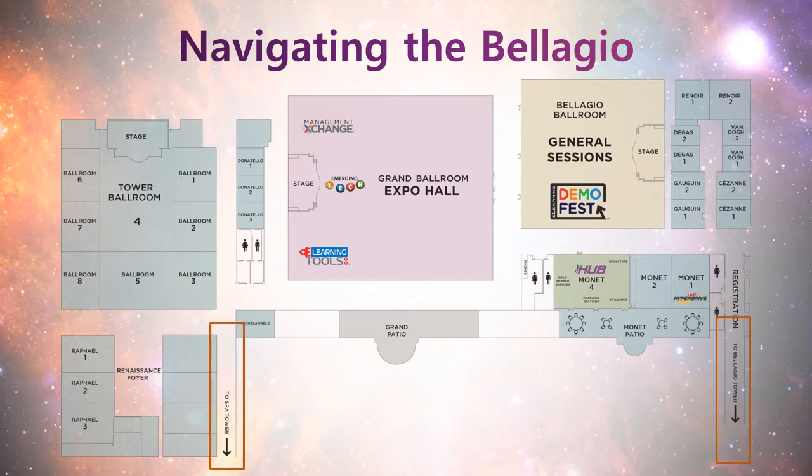If you're staying at the Spa Tower, you'll be accessing the conference space from the hallway on the left-hand side of the map, and if you're staying at the Bellagio Tower, you'll be accessing it from the hallway on the right-hand side of your map. So keep that in mind as you get your bearings at the conference.